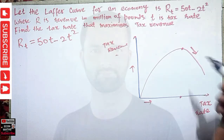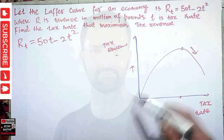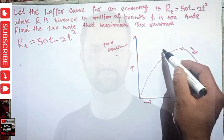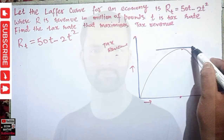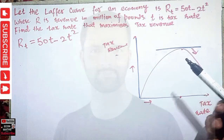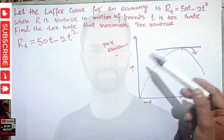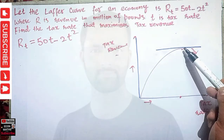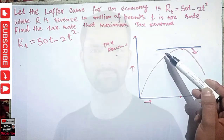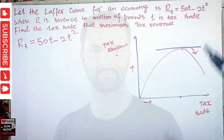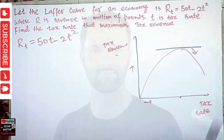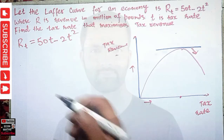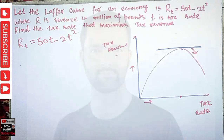We have to find the value of this optimum point — that is the point at which the slope of the tax revenue function is zero. Revenue will be maximized when the slope of the tax revenue function equals zero. So at the optimum, the slope is zero.